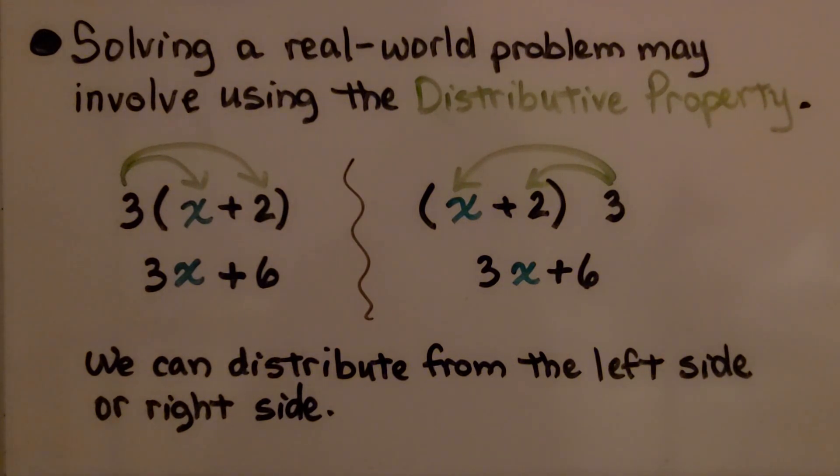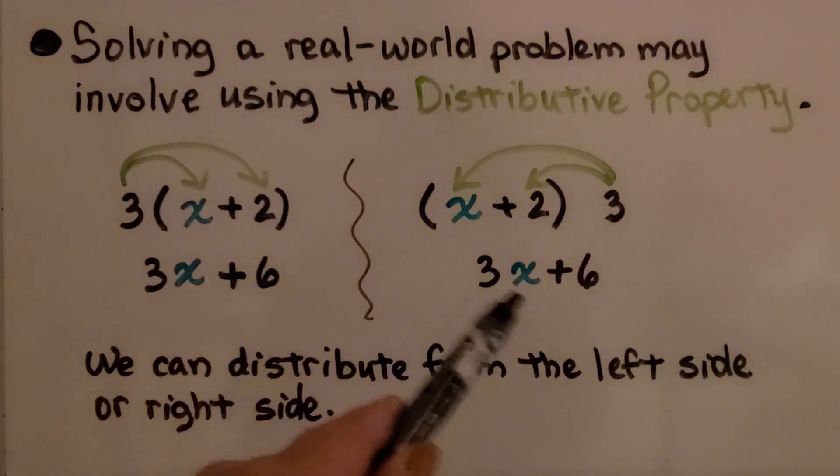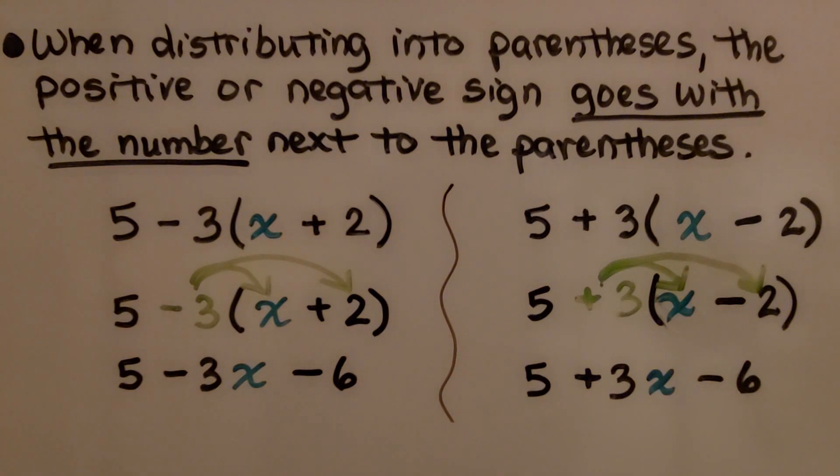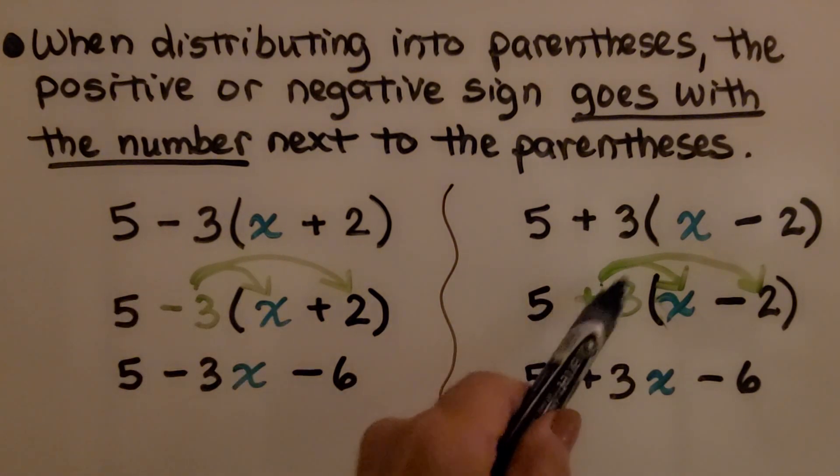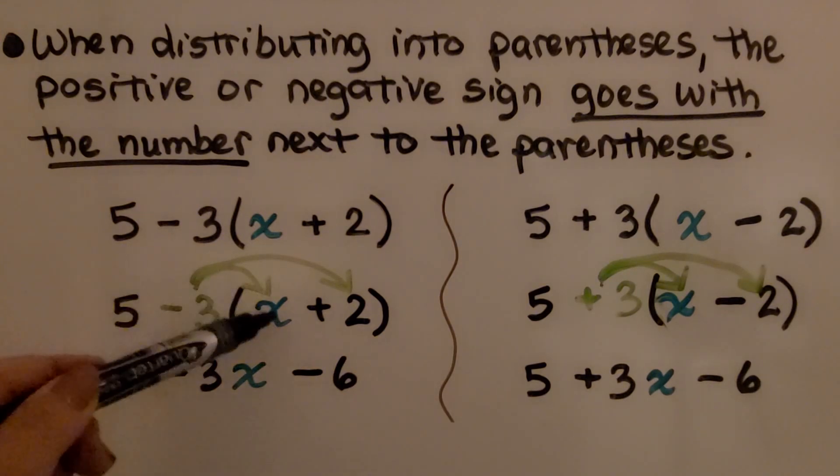And remember, we can distribute from the left side or the right side. Either way, we're going to get the same terms. It's important to remember that when distributing into parentheses, the positive or negative sign goes with the number next to the parentheses. It's distributed with it.